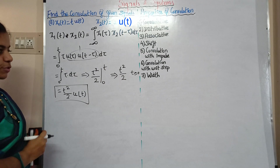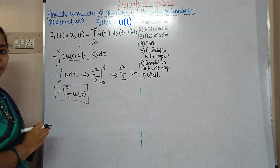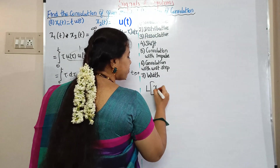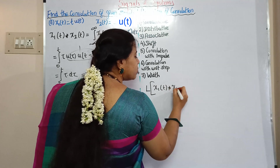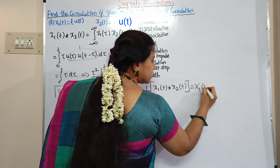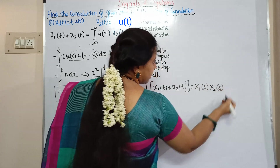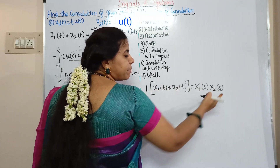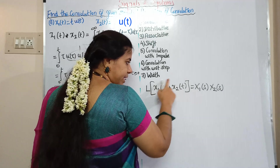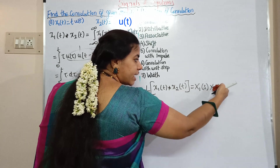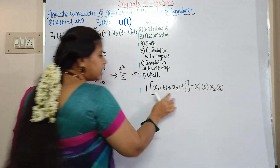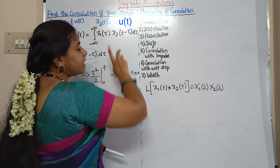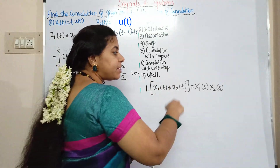We can also use a property from the Laplace transform: the Laplace transform of x1(t) convolved with x2(t) equals X1(s) times X2(s). So in the time domain, convolution corresponds to multiplication in the frequency domain. You can take the Laplace transforms of both signals, multiply them, and then take the inverse Laplace transform to get the convolution result.